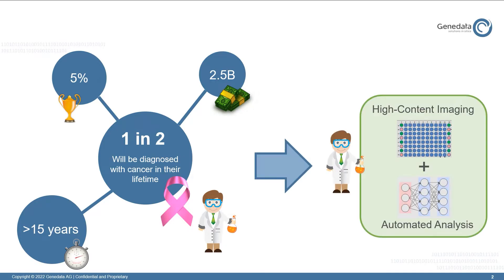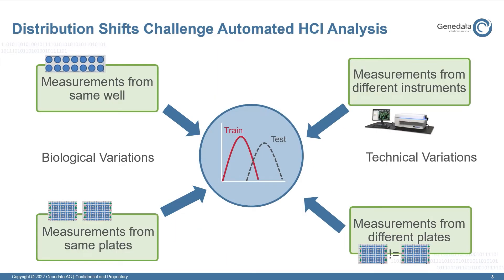Image-based bioassays based on automated microscopes and analysis are routinely used to speed up this process by performing an exhaustive number of biological experiments in parallel. However, biological experiments introduce unavoidable technical and biological variations during the automatic acquisition process, such as different instruments, which challenge the automation analysis workflow.